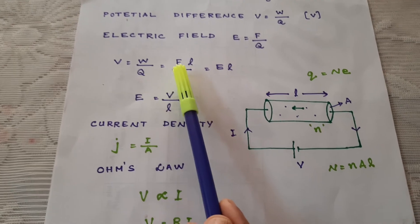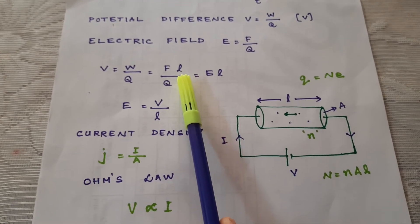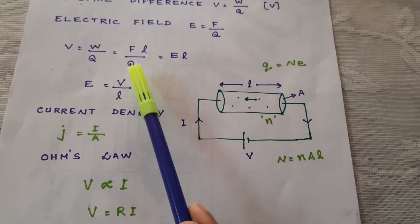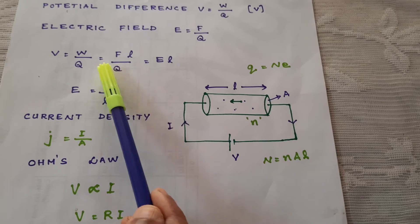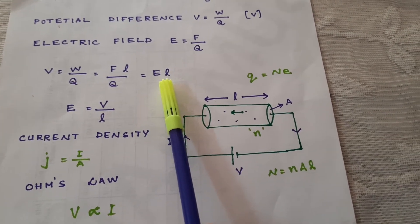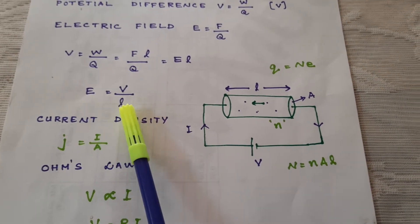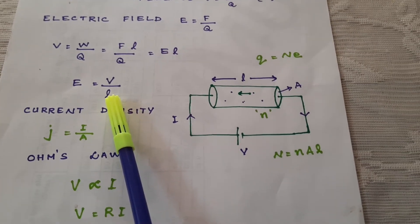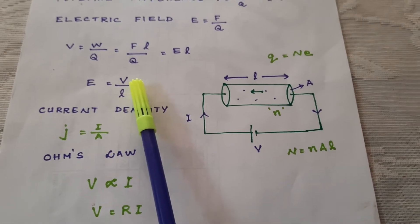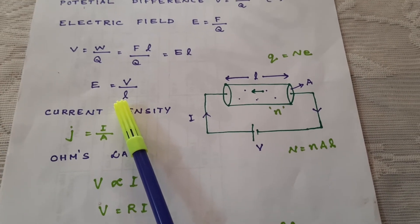The work done W is equal to force into displacement, and L is the displacement of the electrons. So V equals F·L by Q, and F by Q is the electric field. So V equals electric field into length, and therefore electric field E is equal to V by L. That is, electric field is directly proportional to the potential difference and inversely proportional to the length of the conductor.